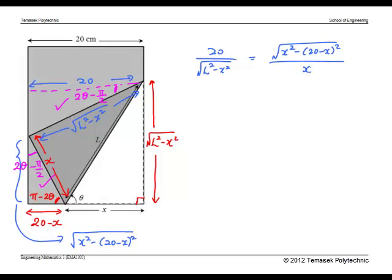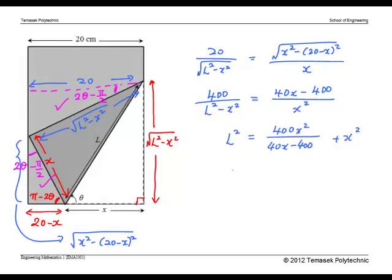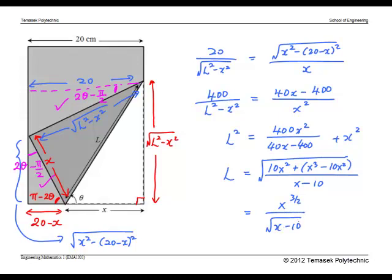By squaring both sides we have, picking L squared as subject we get, and finally taking square root and the positive square root since L is positive, we have, which simplifies to x to the power 3 over 2 divided by square root x minus 10, as required.